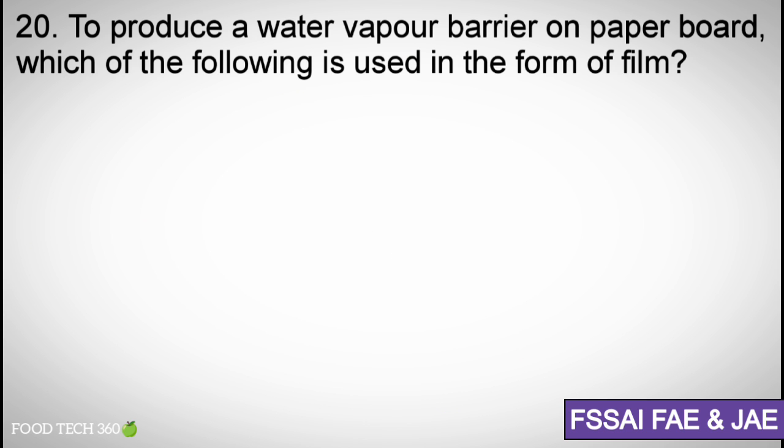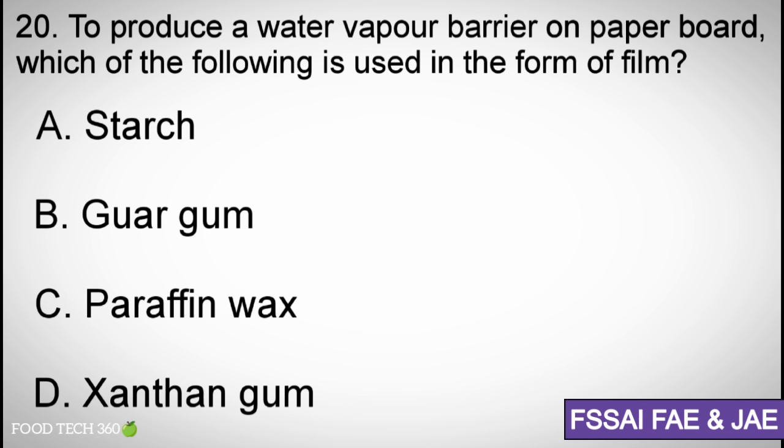Question number 20. To produce a water vapor barrier on paperboard, which of the following is used in the form of film? Options A. Starch, B. Gorgum, C. Paraffin wax, D. Xanthan gum. Correct answer C. Paraffin wax.